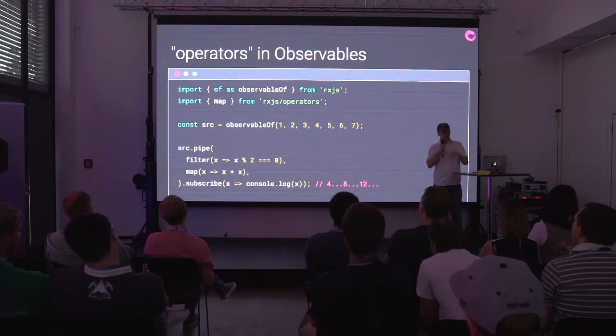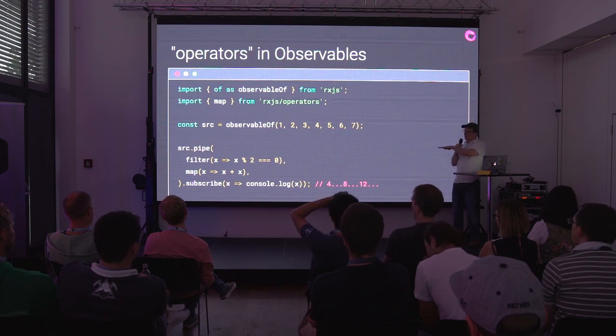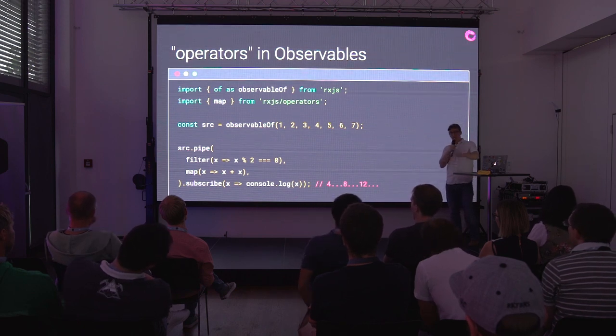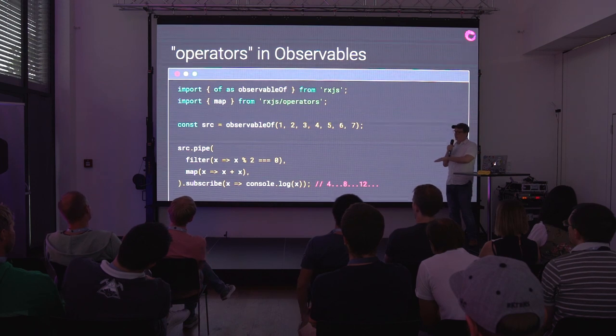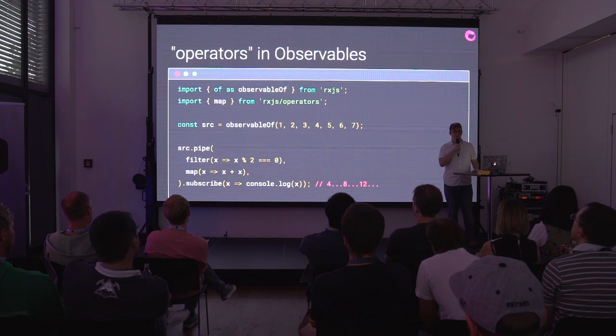We have the same thing with observables. It looks a little different because we're using functional programming to pipe the operators together, but this is exactly the same operation. I've got an observable of values — kind of like an array wrapped in an observable — and I'm piping them through a filter operator and then a map operator. Each step is independent and produces its own observable. I still have to subscribe to it at the end — it doesn't do anything until you subscribe.